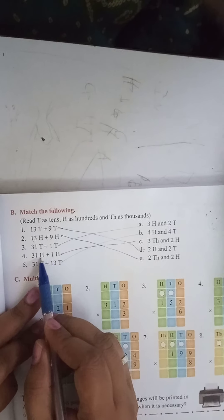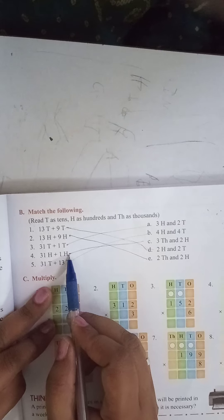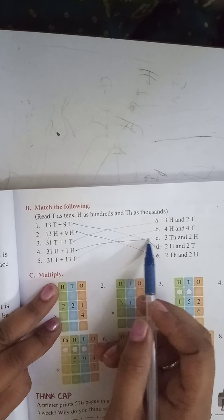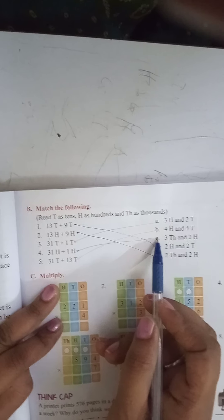Fourth one is 31 hundred plus 1 hundred. 31 plus 1, 32. 3200. The answer will be 3200.